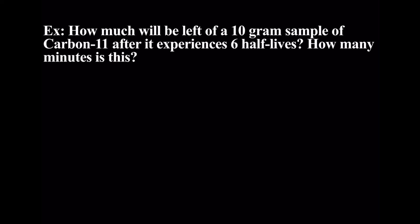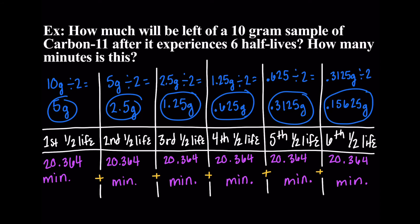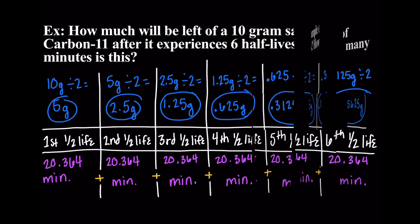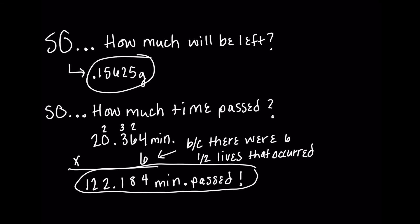How much will be left of a 10 gram sample of carbon-11 after it experiences six half-lives? And how many minutes is this? Well, this is an easy problem. They've asked us for a number of half-lives that have passed by. So all I do is I take my sample and I divide it by two, six times. And at the very end, I get 0.15625 grams of sample left and 122.184 minutes had passed by. I just take the half-life and multiply it by six because that's how many half-lives had passed.